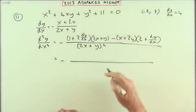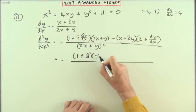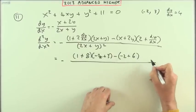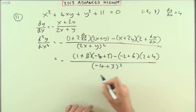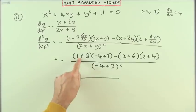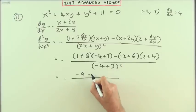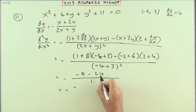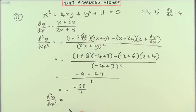Rather than substituting the dy/dx expression back in, I'll just evaluate at the point directly. Substituting: numerator becomes negative of (1 + 2×4)(2×(-2) + 3) minus ((-2) + 2×3)(2 + 4), over denominator (2×(-2) + 3)² = (-1)² = 1. That gives negative of (9×(-1)) minus (4×6) = negative of (-9 - 24) = negative of -33 over 1. So d²y/dx² = 33, confirming the earlier result.